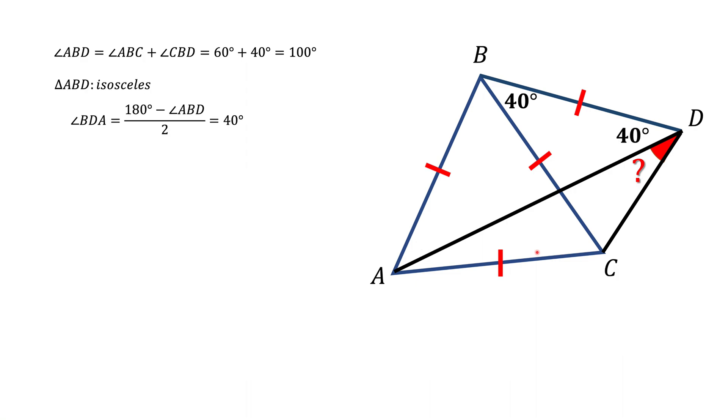Next thing to notice, that triangle CBD is an isosceles triangle. We know one angle is 40 degrees, and the other two have to be congruent, and each of them has to be 70 degrees.